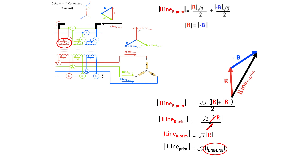At the risk of repeating myself, but I'll try to put some visuals up for it: the current flowing in the individual windings of the transformer is equated such that the magnitude of the line current is equal to root 3 times the current flowing in the individual transformer winding on the primary side.